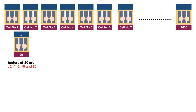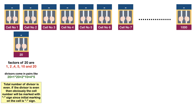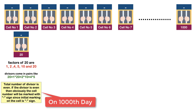Factors of 20 are 1, 2, 4, 5, 10, and 20. Hence, it gets toggled on days 1, 2, 4, 5, 10, and 20. An important observation is that divisors come in pairs: 20 = 1×20 = 2×10 = 4×5. We can see that the total number of divisors is even. If the number of divisors is even, then obviously the cell will be marked with minus sign, since the initial marking is minus.